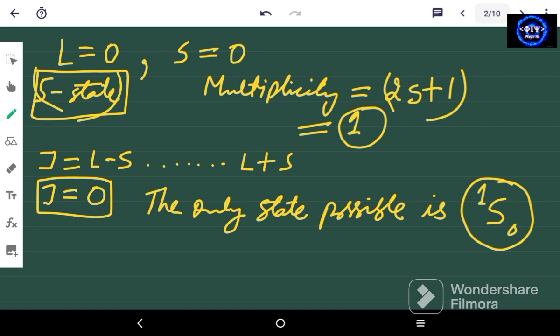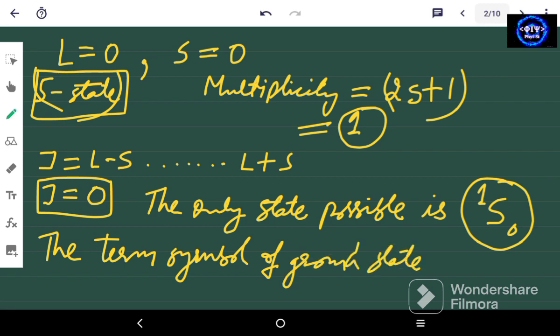This is the term value of the ground state. Because this is the only state possible, it means the term symbol of ground state is 1S0. So this is the final answer.